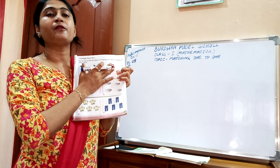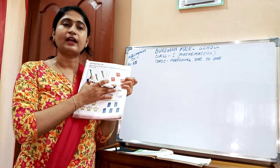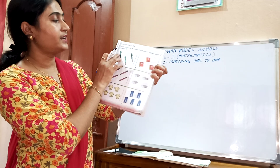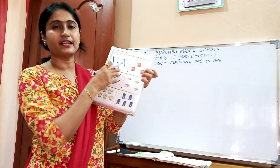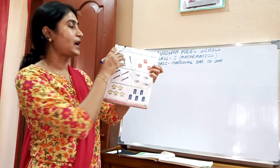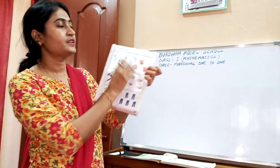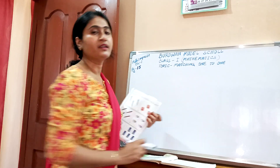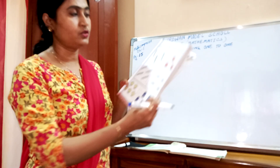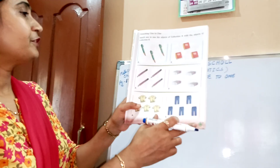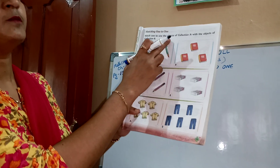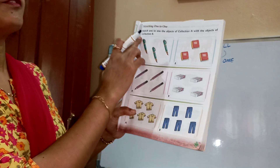This type of math we have done in our math magic book. Today we will practice. There are pictures of a few objects and we have to match one to one. Okay children, today's topic is matching one to one. Please all of you open page number 15: match one to one the objects of collection A with the objects of collection B.